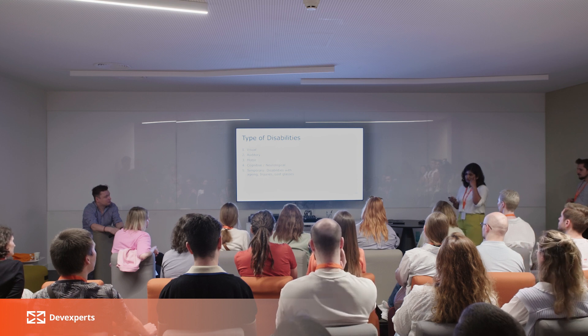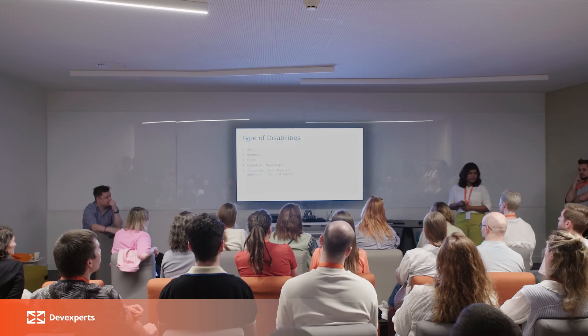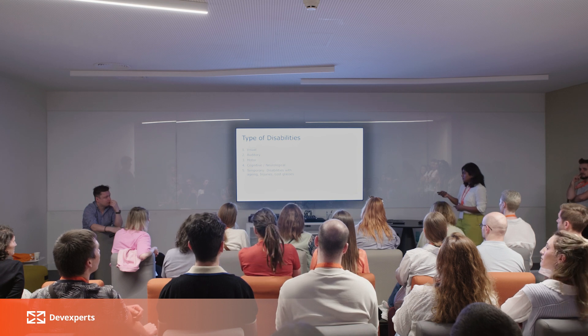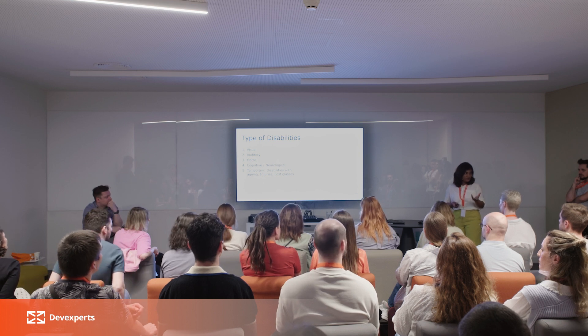There are four major categories of disability: vision — related to the sense of sight; auditory — related to the sense of hearing; motor disabilities — related to body movement; and cognitive/neurological — related to how someone's brain works. The fifth is temporary or situational disability. With aging, people may face some of the above disabilities. Injuries like a fractured hand restrict certain body movements. If you lose your glasses, you might need software help like the zoom feature.